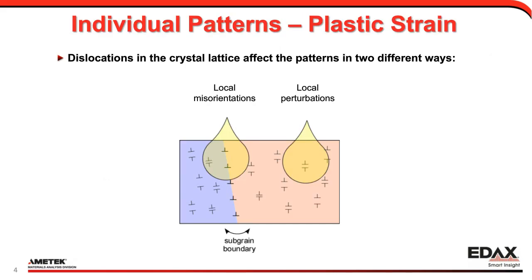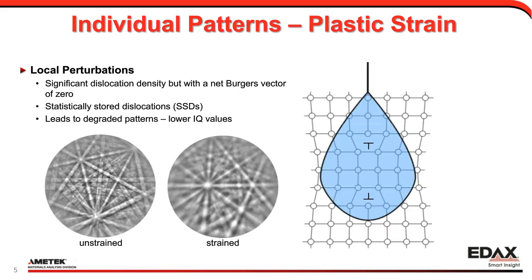When we think of plastic strain, we think of dislocations and crystal lattice, and they can affect patterns in two different ways. If you have a set of aligned dislocations forming a sub-grain boundary, those will create a local misorientation within the microstructure. You may also have local perturbations that create local misorientations in a shorter, smaller order, and sometimes they can cancel each other out. These local perturbations can have a significant amount of dislocation density, but a net Burgers vector of zero. We refer to these as statistically stored dislocations, or SSDs, and they lead to degraded pattern quality — lower IQ values.